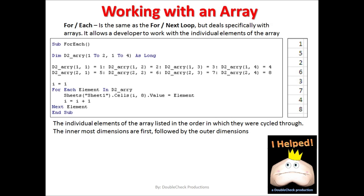Now we want to start working with arrays and utilize the information stored in them. One of the ways we can do that is with a for-each loop. A for-each loop is like a for-next loop, but it deals specifically with arrays and collections. Here we have an example of a static two-dimensional array with dimensions of two rows and four columns. The purpose of this code is to load the array and then extract the data to print.